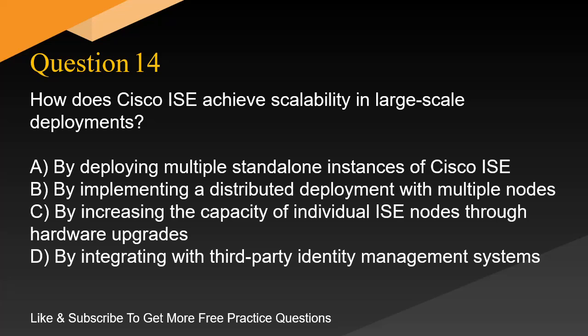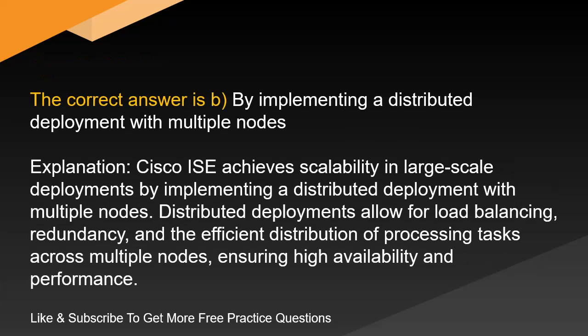Question 14. How does Cisco ISE achieve scalability in large-scale deployments? A. By deploying multiple standalone instances of Cisco ISE. B. By implementing a distributed deployment with multiple nodes. C. By increasing the capacity of individual ISE nodes through hardware upgrades. D. By integrating with third-party identity management systems. The correct answer is B. By implementing a distributed deployment with multiple nodes.